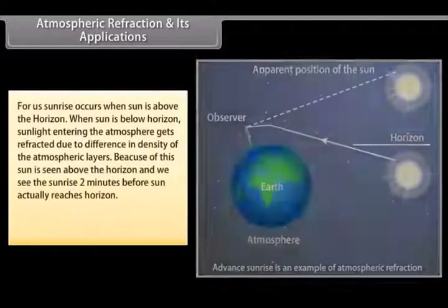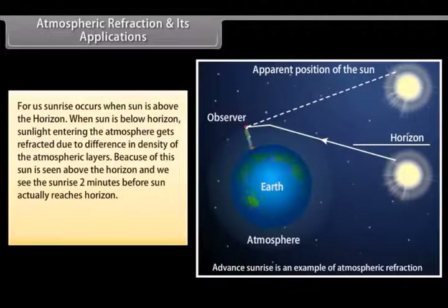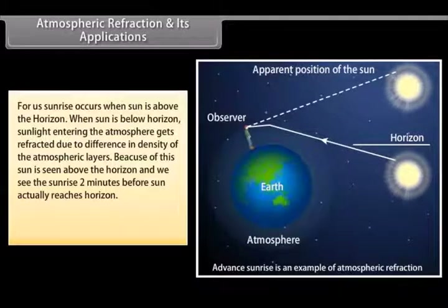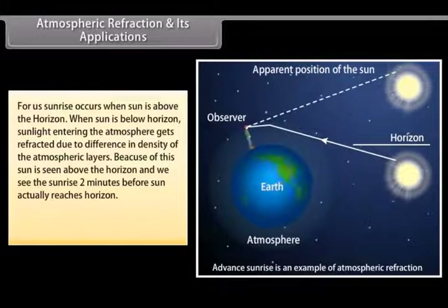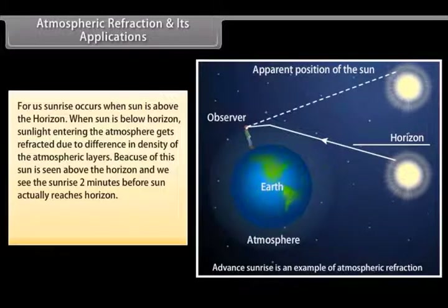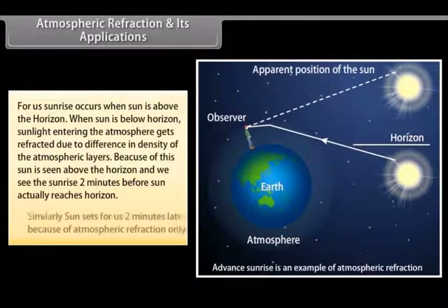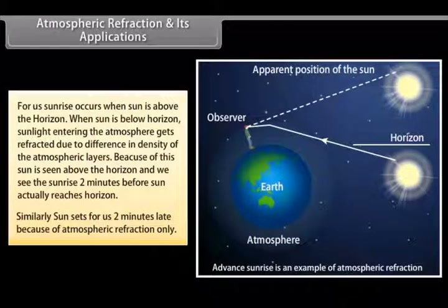For us, sunrise occurs when the sun is above the horizon. When the sun is actually below the horizon, sunlight entering the atmosphere gets refracted due to differences in density of the atmospheric layers, causing the sun to appear above the horizon. Because of this, we see sunrise about two minutes before the sun actually reaches the horizon. Similarly, the sun sets for us two minutes late because of atmospheric refraction.